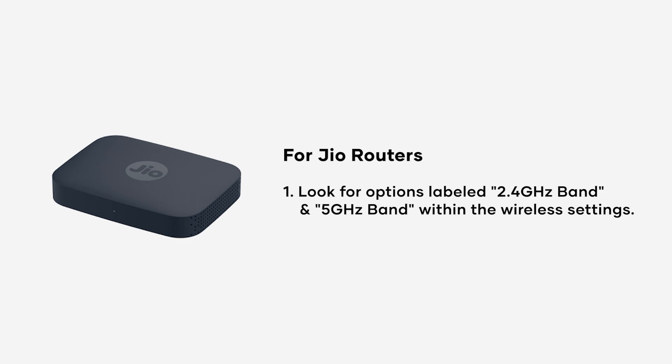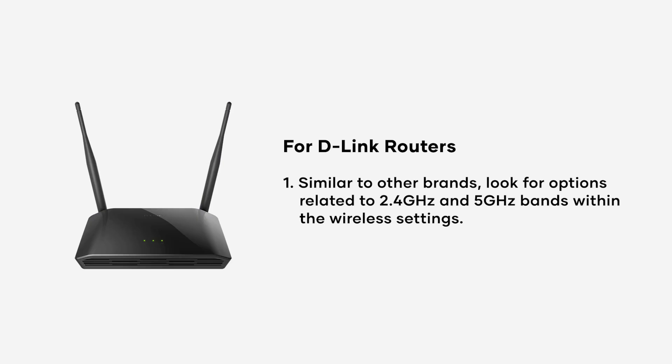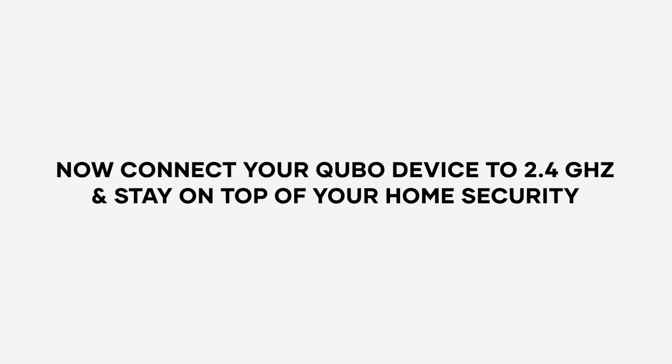For Geo routers, check for 2.4 GHz band and 5 GHz band options in the wireless settings. For TP-Link routers, find separate SSID settings for both bands in the wireless settings. For D-Link routers, check the wireless settings for options related to 2.4 GHz and 5 GHz bands.